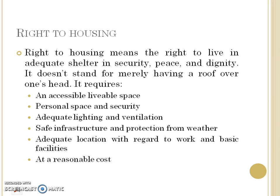The main features required for adequate shelter are: an accessible and livable space — accessible means where people can come and go — personal space and security, adequate lighting and ventilation, safe infrastructure, protection from weather, and adequate location with regard to work and basic facilities such as schools and hospitals.